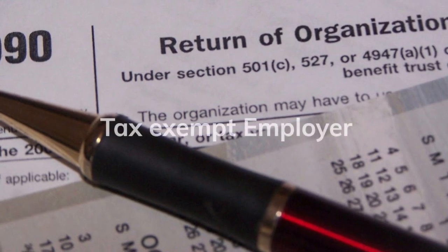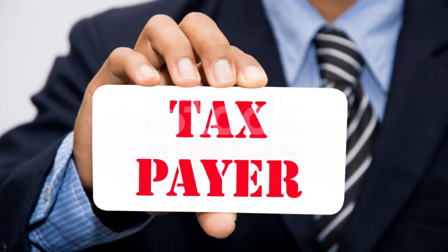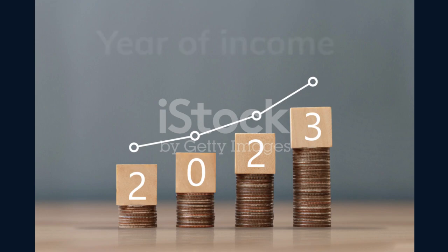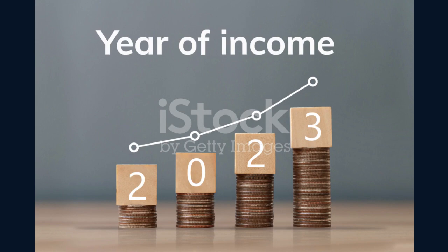Tax-Exempt Employer refers to an employer whose income is exempt from tax. It's important to be aware of this distinction when considering tax implications in relation to your employer. Taxpayer: a taxpayer is any person who derives an amount subject to tax under the Ugandan Tax Act, including individuals who incur assessed losses for a year of income and anyone required by the Act to furnish a tax return. Year of Income: in Uganda, the year of income is the 12-month period ending on 30 June, and it also includes two special cases — the substituted year of income and the transitional year of income.